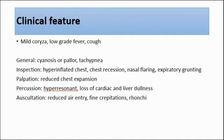For bronchiolitis, on general appearance, we can look whether the infant is having cyanosis or pallor. Usually there will be tachypnea, which is fast breathing. On inspection, we can see hyperinflated chest and chest recession, which involves intercostal, subcostal, or suprasternal recession. In infants, the signs of respiratory distress would be nasal flaring, expiratory grunting, and also head bobbing.